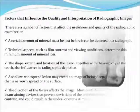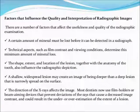Demineralization and destruction of hard tooth structure results in the loss of tooth density in the area of the lesion. This decreased density causes greater penetration of the x-ray in the caries area. As a result, the caries lesion appears radiolucent. The degree of radiolucency determines the extent and severity of the destruction.